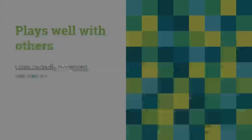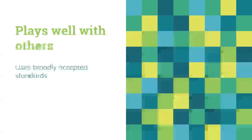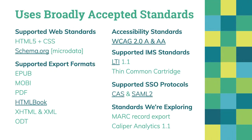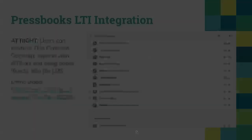The fourth principle is: does the tool play well with others — do we use broadly accepted standards? Understanding and using standards well is something many tech companies don't do well, but it's really important and an important value for us. We care about web standards, book export standards, and accessibility standards. We've published a VPAT and sought to make our interface compliant with WCAG 2.0 A and AA standards. We also support IMS global standards including LTI and Thin Common Cartridge, SSO, and we're exploring MARC record exports.